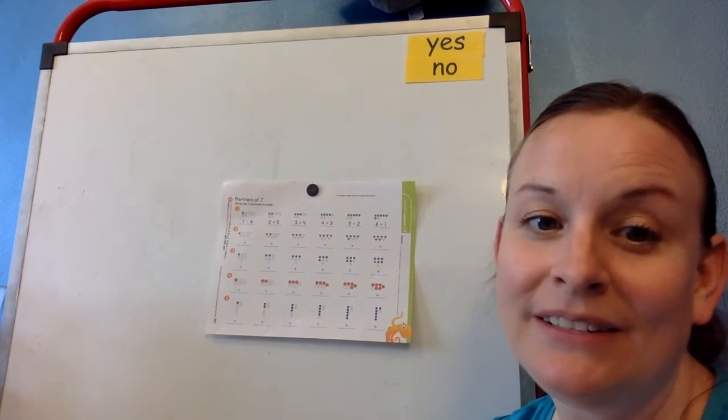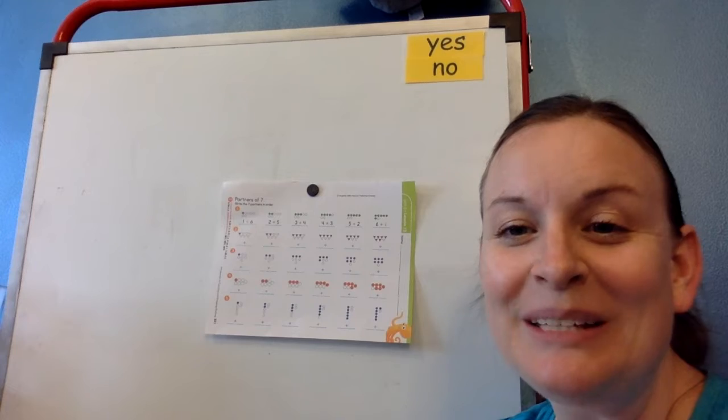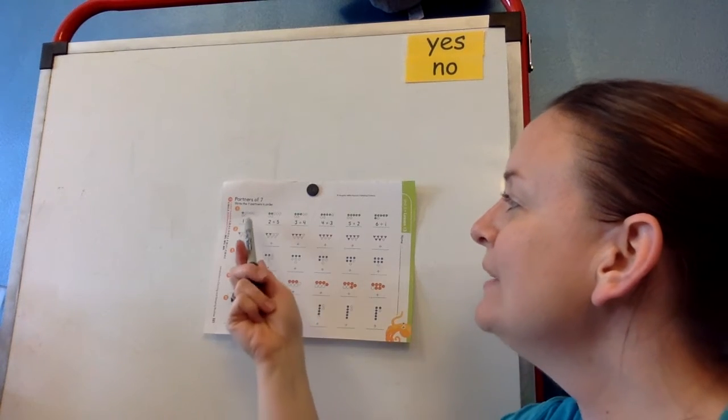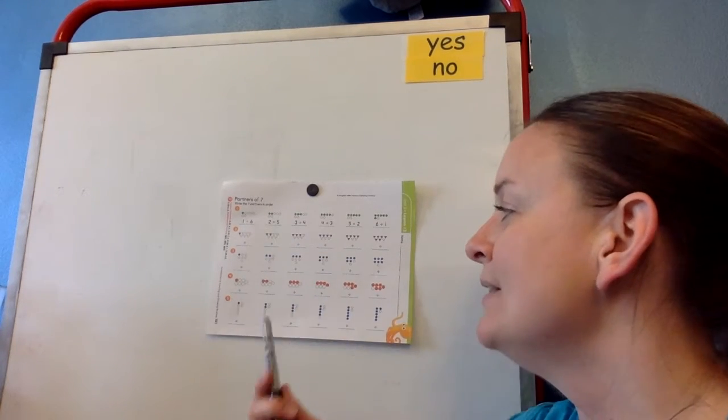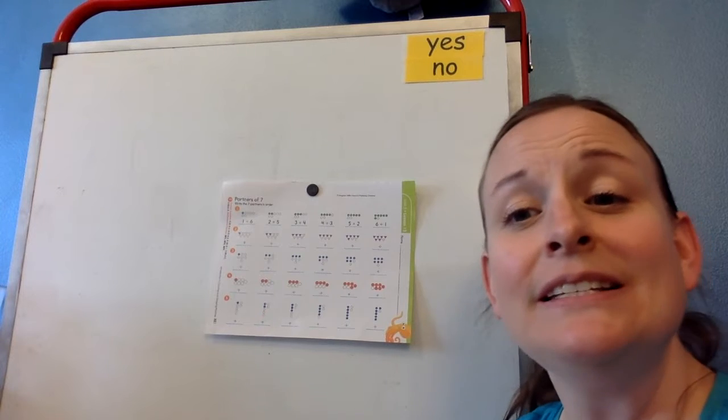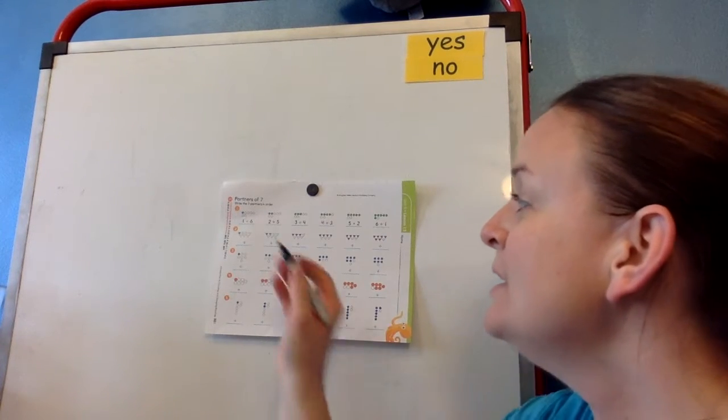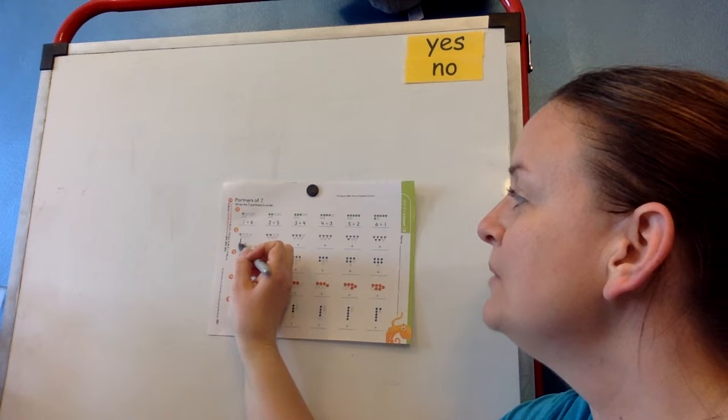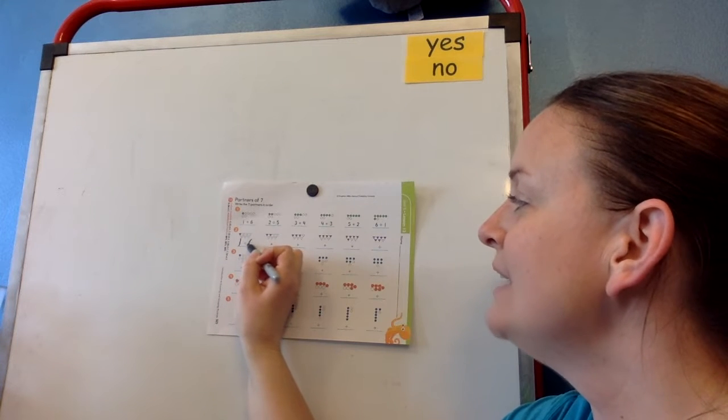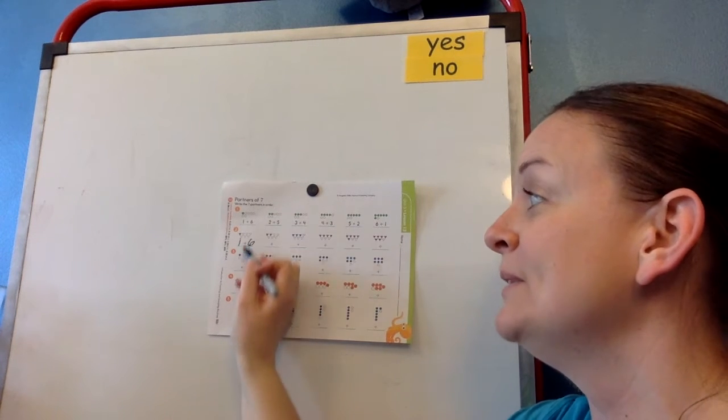And I bet you guys are getting really good at these partners. Remember, they want you to notice that even if they draw the things differently, it still creates the same partner numbers. So we have one purple triangle and six white triangles, and I notice the pattern.